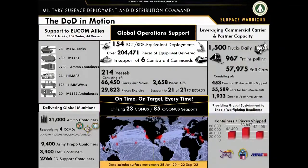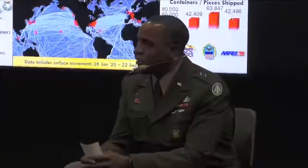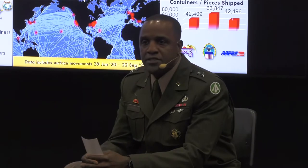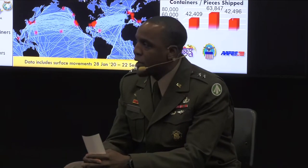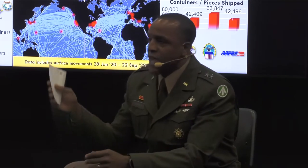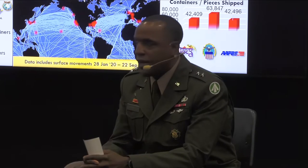This is our DOD in motion slide, covering the op tempo of our Army over the past two fiscal years, FY21 through FY22. We have been a relatively busy Army operating across the six combatant commands — about 154 BCT brigade equivalent deployments, roughly 77 brigade equivalent deployments per fiscal year. Over 200,000 pieces of equipment moved. On any given day, 1,500 trucks operating across our strategic highways supporting our installations. Over 30,000 ammunition containers moved, including in support of 21 presidential drawdown authority missions, and significant Class VII moved to assure our European allies and deter Russian aggression in UCOM.